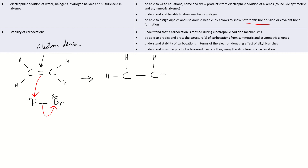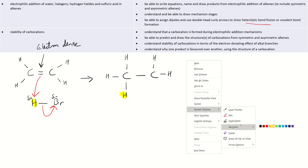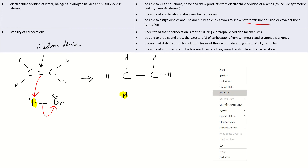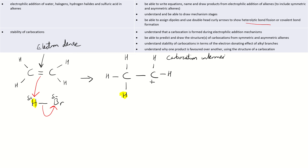It doesn't matter which carbon I put the hydrogen on here because they're both perfectly symmetrical, so I'll put it on the left. The other carbon has lost the electron it was initially sharing, so because it's lost an electron it now has a positive charge. This is what's called a carbocation intermediate — carbon, cation, positive charge — and 'intermediate' refers to the stage.